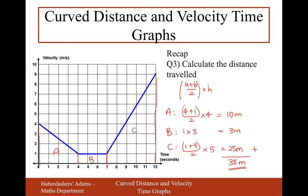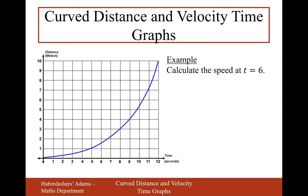Now let's get on to the curvy part of this video. What happens if the diagram looks like this? We have a distance time graph where the distance is slowly changing to start with, but then changing quite fast later on. The object is travelling quite slowly to start with, then getting further away more quickly, so the speed is increasing as the graph goes on.